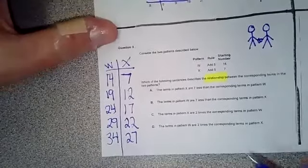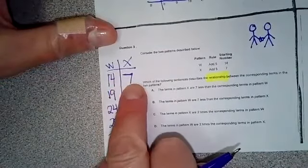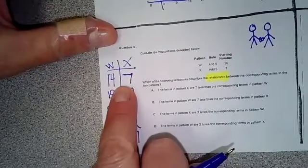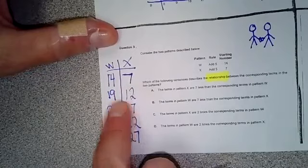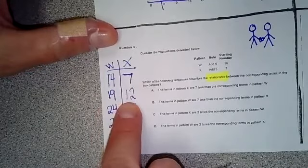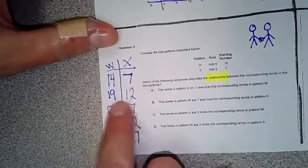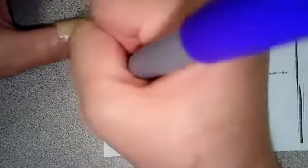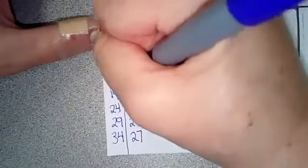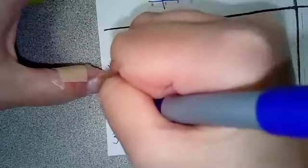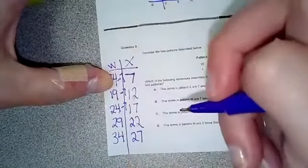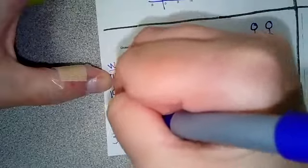Well, if you look at this carefully, from 14 to 7 you can either say that it divides by 2 or it subtracts 7. Well let's see what happens from 19. Does 19 divide by 2 to get 12? No, it subtracts 7. So the rule must be subtract minus 7. 19 minus 7 is 12, 24 minus 7 is 17, 29 minus 7 is 22, 34 minus 7 is 27.